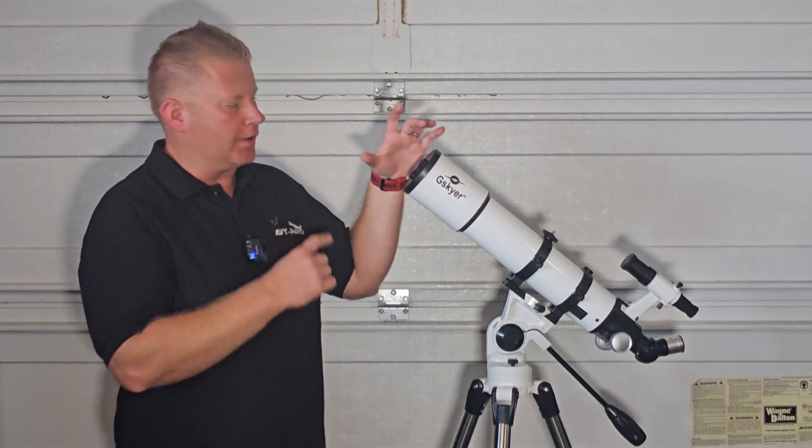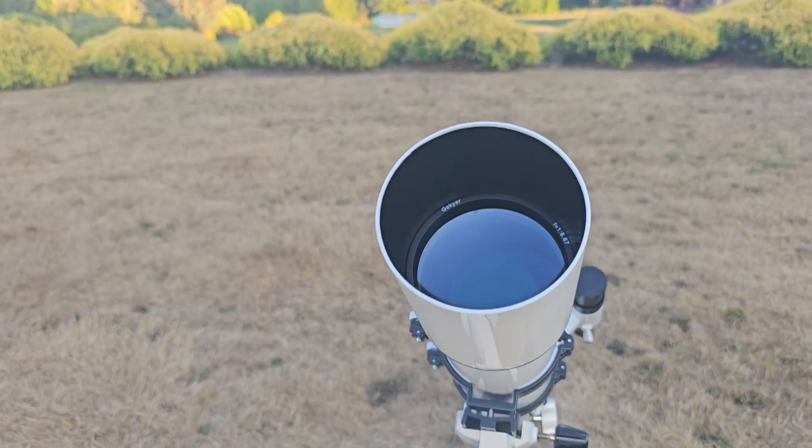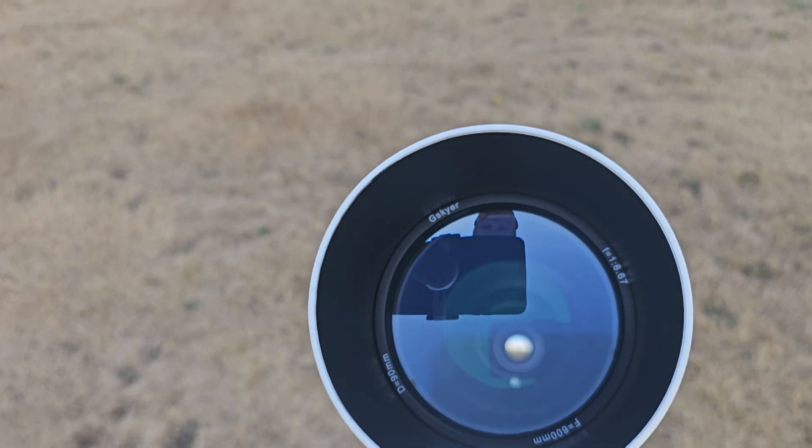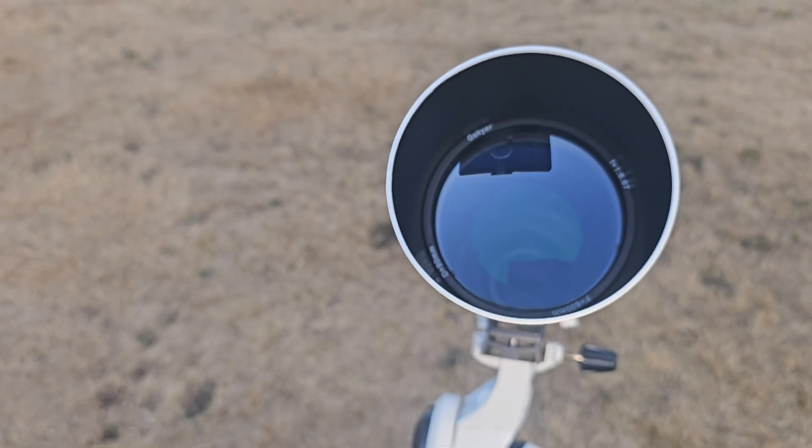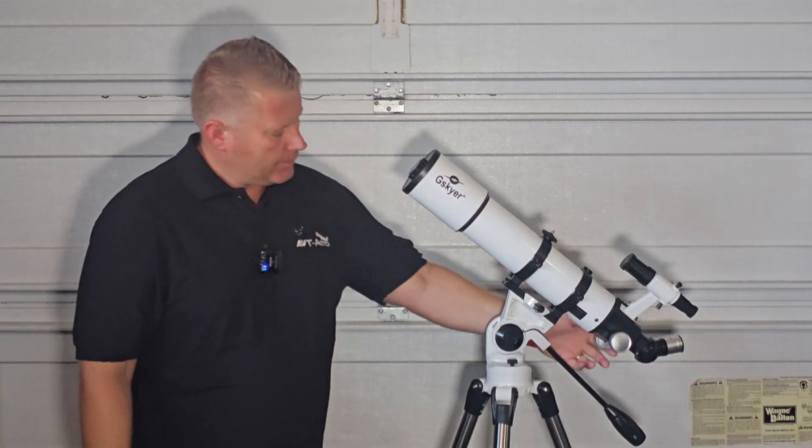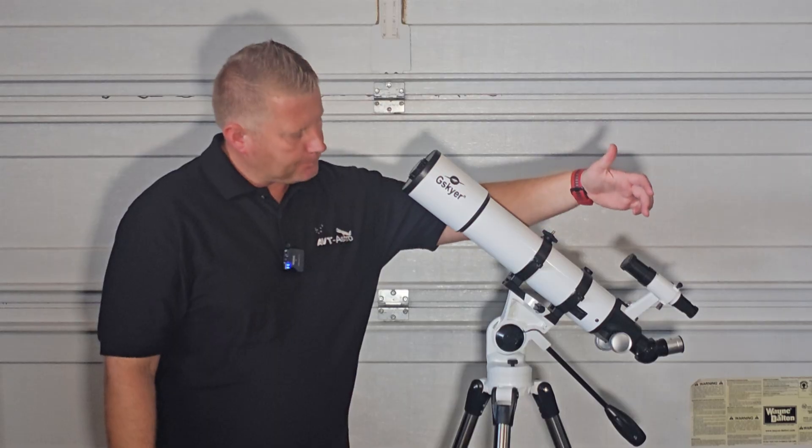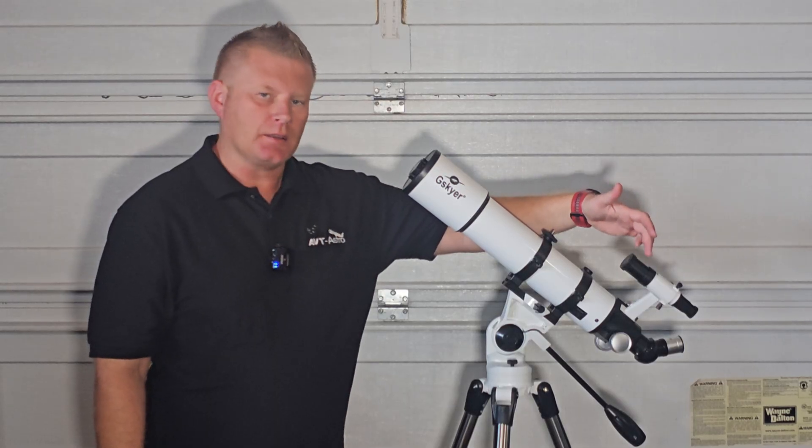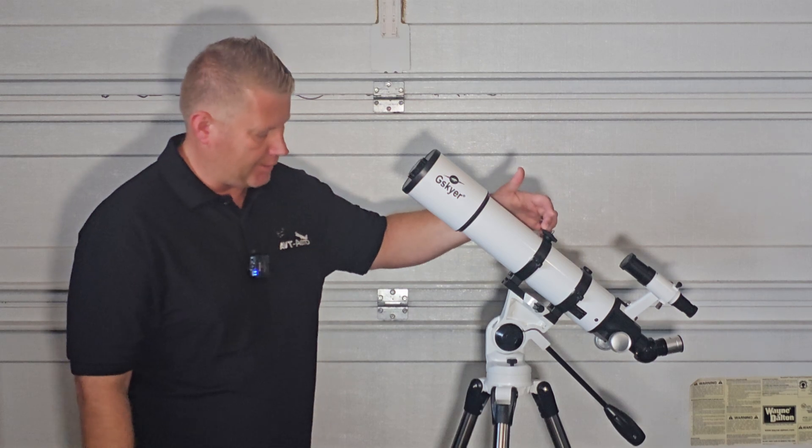So this is a 90mm, a little bit larger. We're talking about the objective size here, so basically how big the front lens is. That translates to 3.4 inches if you like inches better. It does come with the inch and a quarter focuser. Finder scope with this guy that's included is a 30mm finder scope, so a pretty good size for this size telescope.